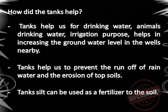How did the tanks help? Tanks help us for drinking water and animals' drinking water, for irrigation purposes, and help in increasing the groundwater level in nearby wells. Tanks help us to prevent runoff rainwater and the erosion of topsoil. Tank silt can also be used as a fertilizer for the soil.